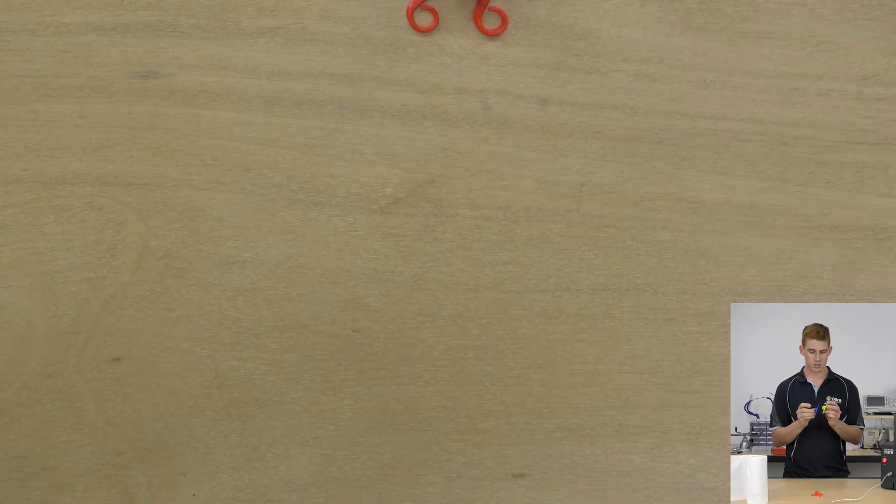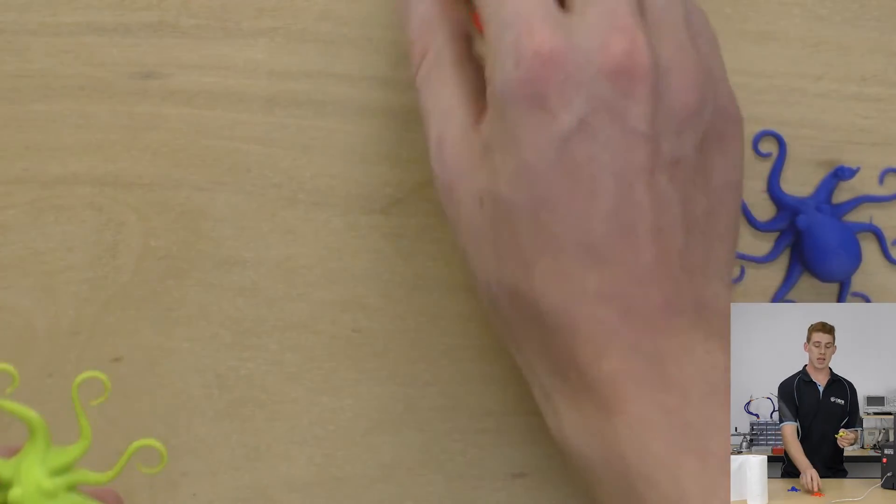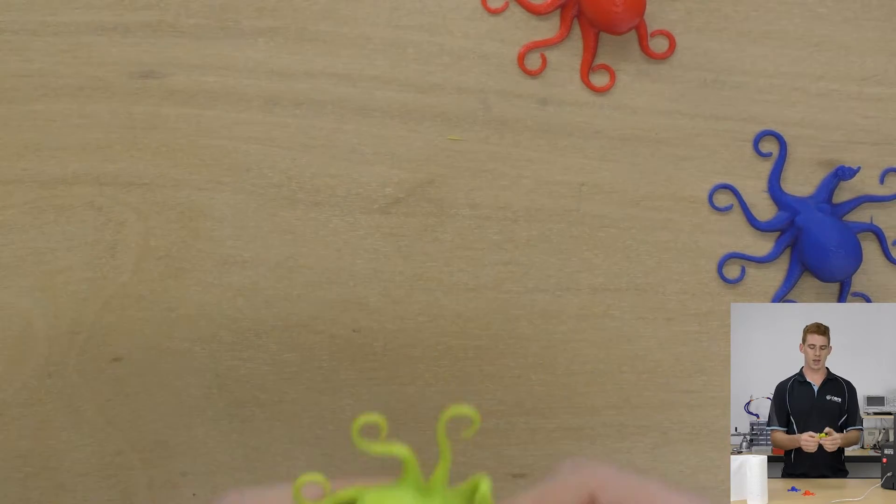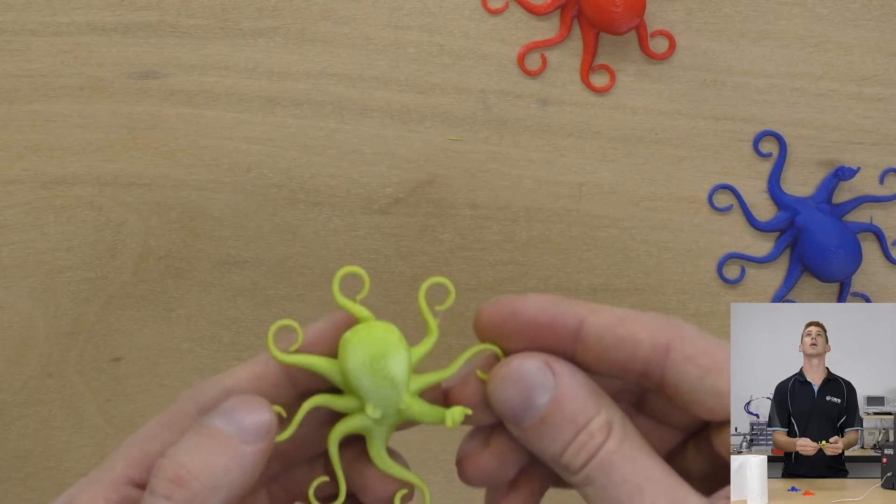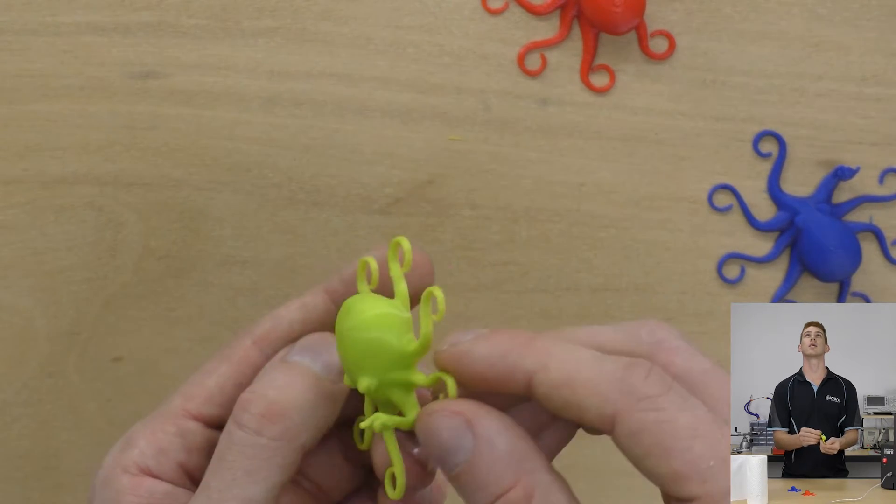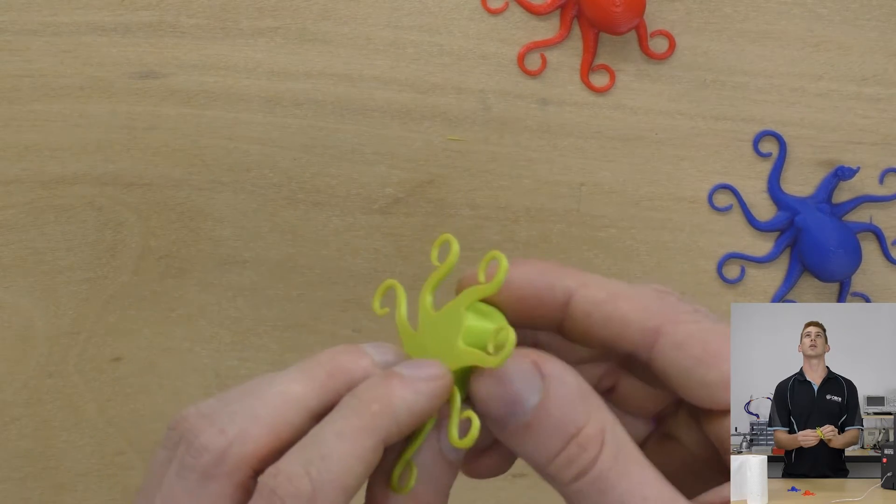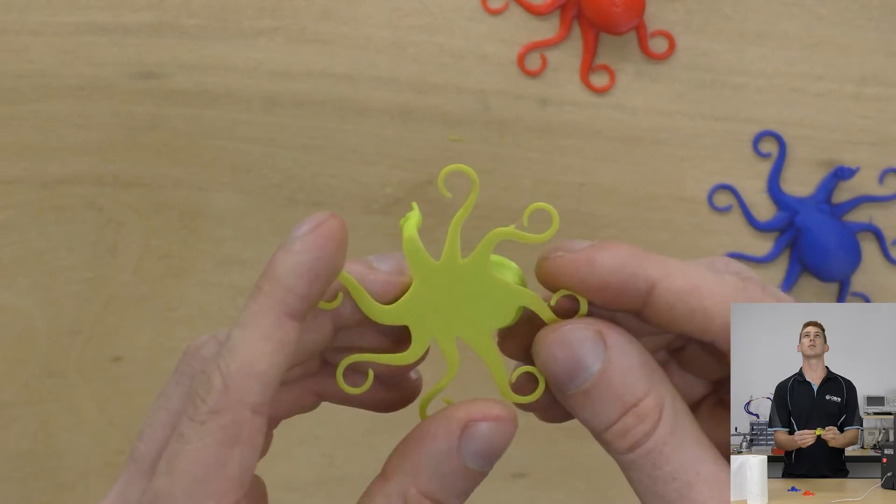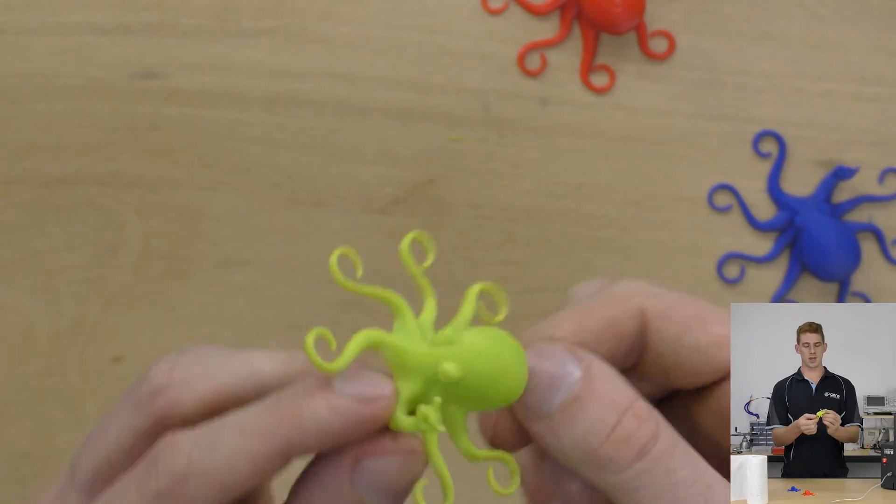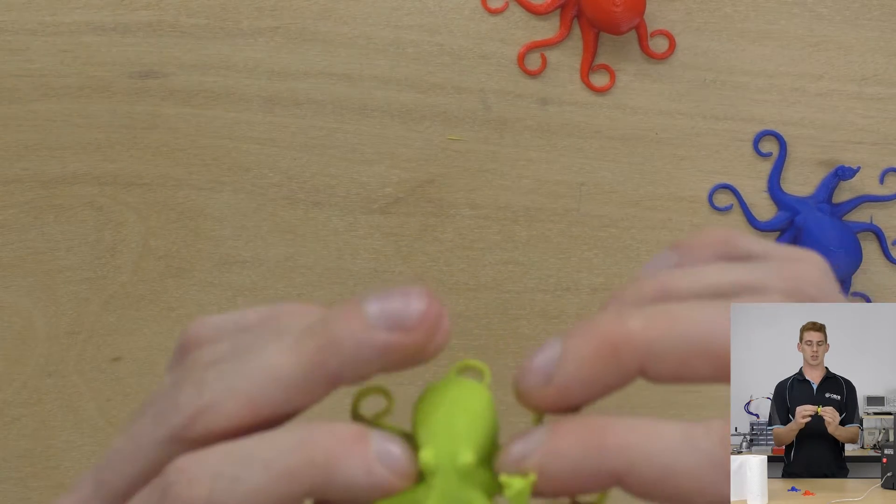So that is a high-speed print, and these are both standard quality prints. We'll take a look at the difference. Now remember that this one was ABS and this one was printed in PLA, so bear that in mind. You can see that the PLA is actually quite shiny, quite a nice shiny finish, and that's just a feature of that PolyLite PLA. The bottom of the print's a little bit darker, and that's just because it's been pressed against the hotter temperature for a while.